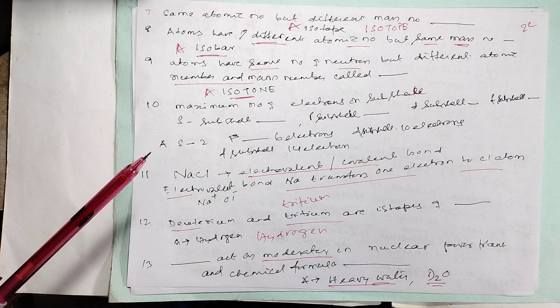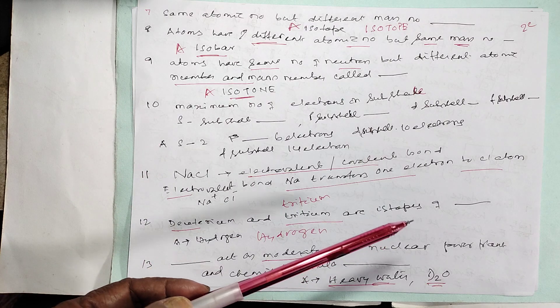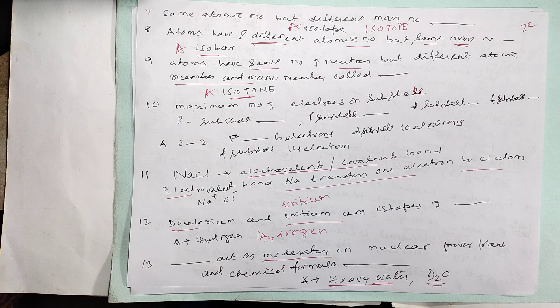Deuterium and tritium are isotope materials. Most important: what acts as a moderator in nuclear power plants? The chemical form is heavy water, deuterium oxide.